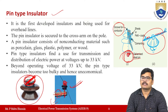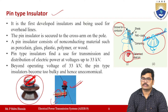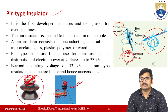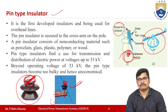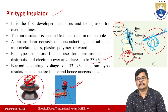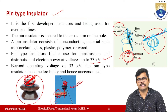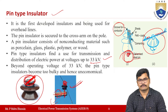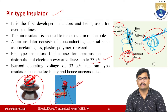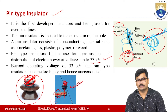Pin type insulators consist of non-conducting materials such as porcelain, glass, plastic, polymer, or wood. These insulators are found in transmission line systems where the voltage is up to 33 kV. If the voltage level is beyond 33 kV, pin type insulators cannot be used as they become uneconomical. Pin type insulators should only be used for voltage levels up to 33 kV.